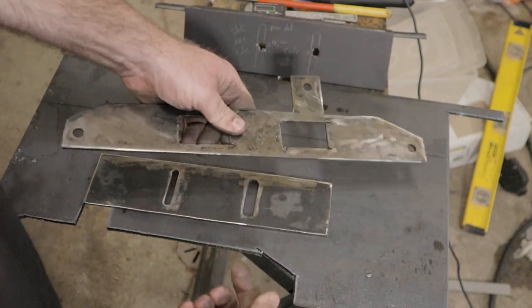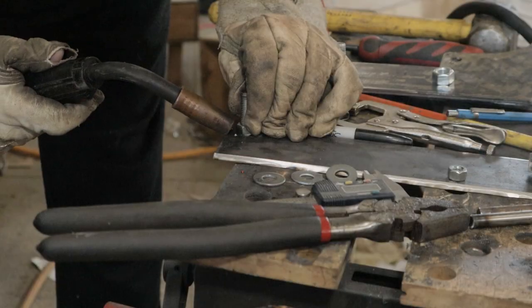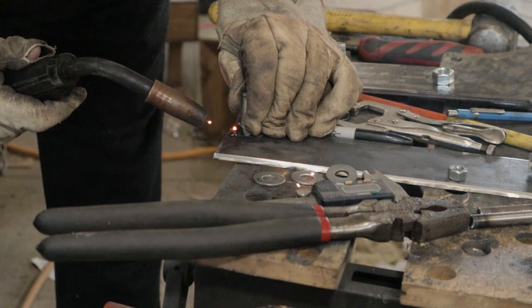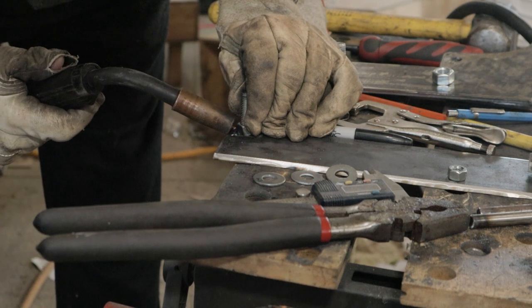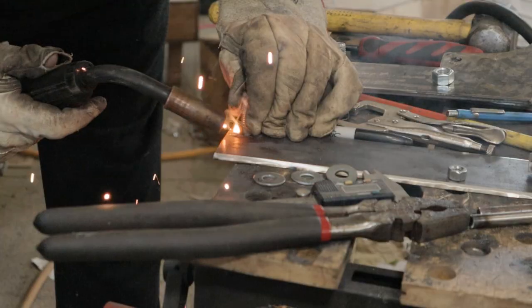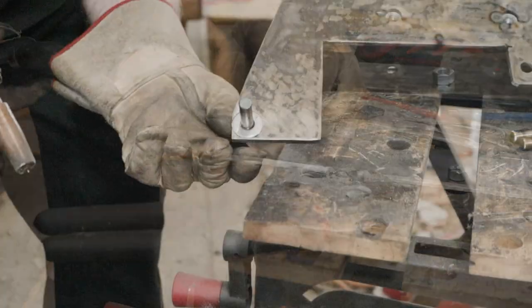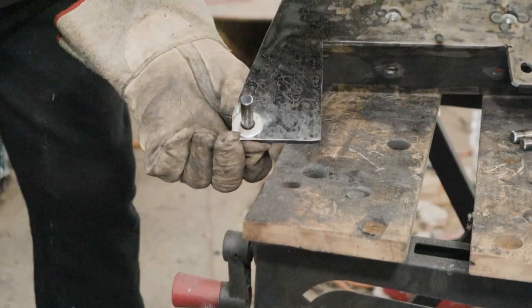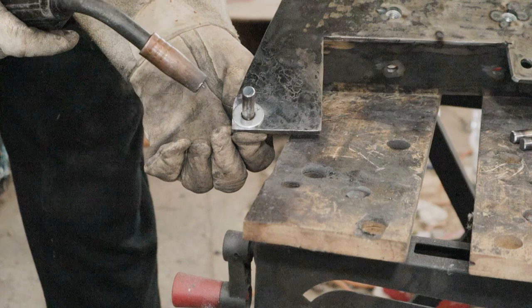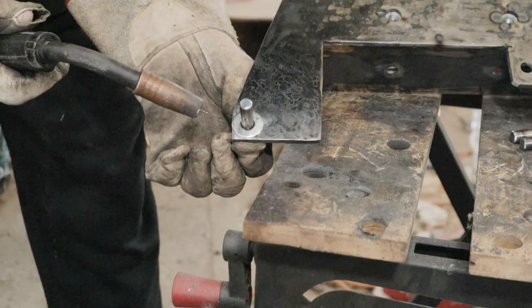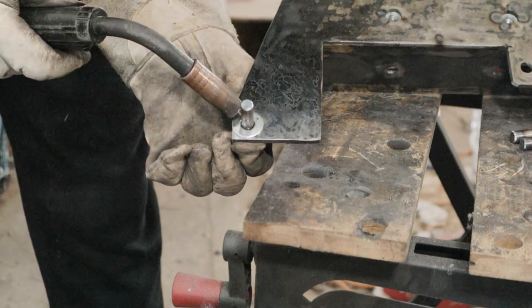Some of the holes need nuts welded on, so I thread them onto a bolt and insert the bolt into the hole to ensure the nut is centered in the hole. The pins that the turnbuckles attach to need some sort of platform for the turnbuckles to sit on, so I welded on some washers. As a guide, I put the pins into the holes, and this helps keep the washers level for welding.